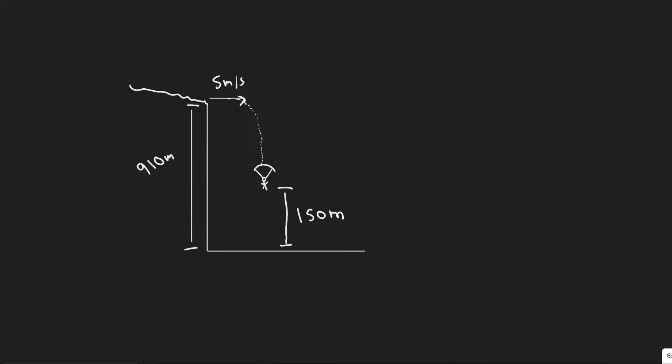In this problem, extreme sports enthusiasts jump off the top of El Capitan, a sheer granite cliff of height 910 meters in Yosemite National Park. Assume a jumper runs horizontally off the top with a speed of 5 meters per second, enjoys a freefall until she is 150 meters above the valley floor, at which she opens her parachute.